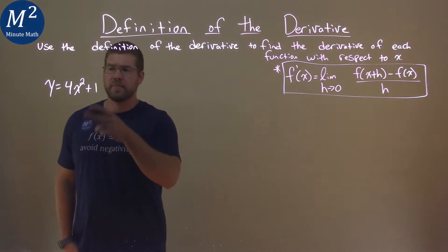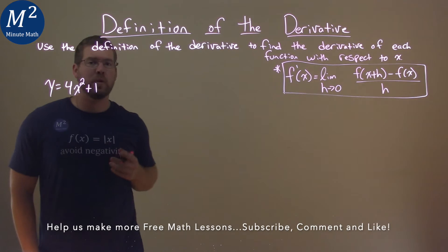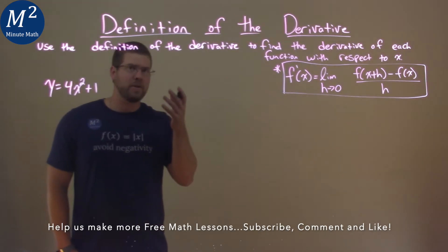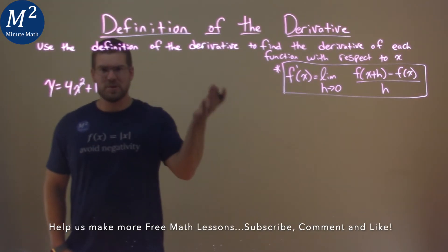We're given this problem right here: y equals 4x squared plus 1, and we need to find the derivative using the definition of the derivative.